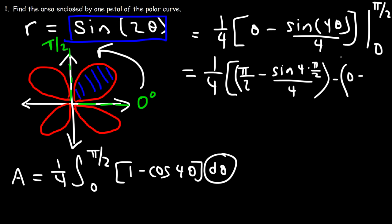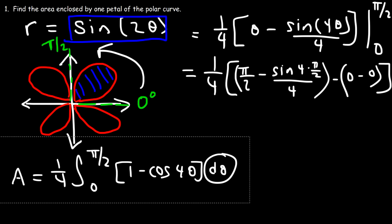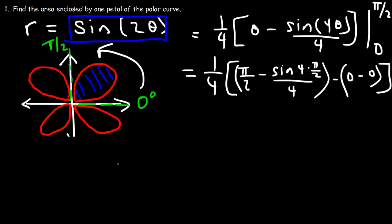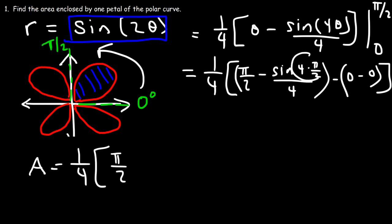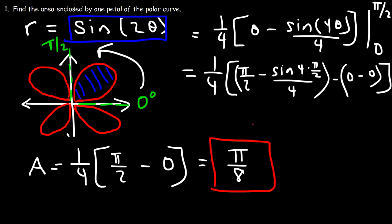So we're going to have one-fourth times pi over 2. Now 4 times pi over 2 is 2 pi, and sine of 2 pi is 0. So then this becomes one-fourth times pi over 2, which is simply pi over 8. And so that is the area of the shaded region.